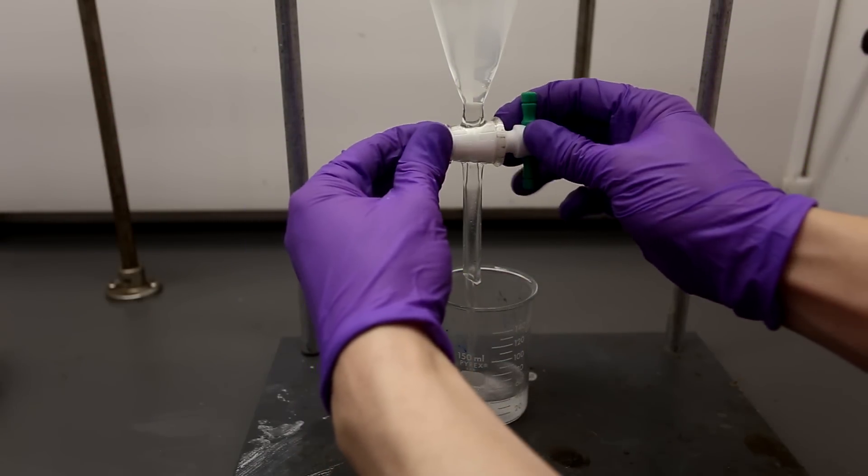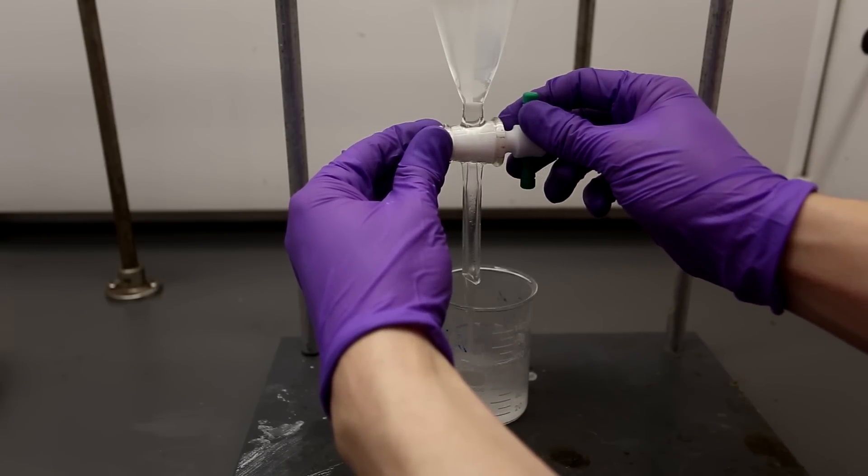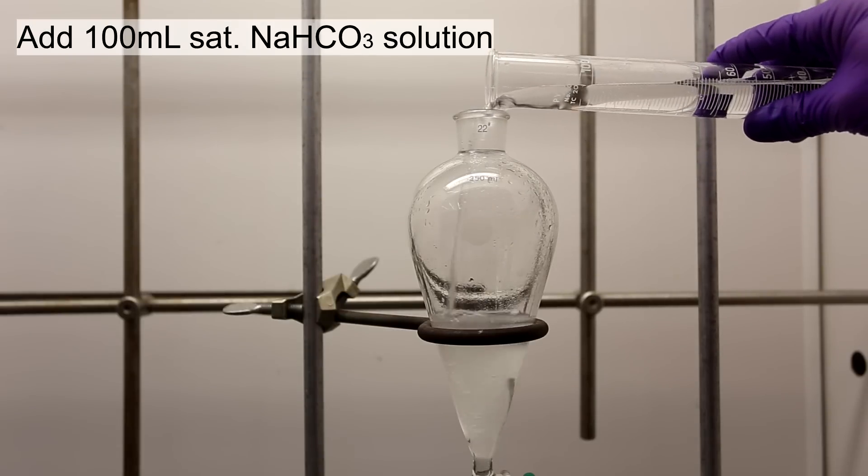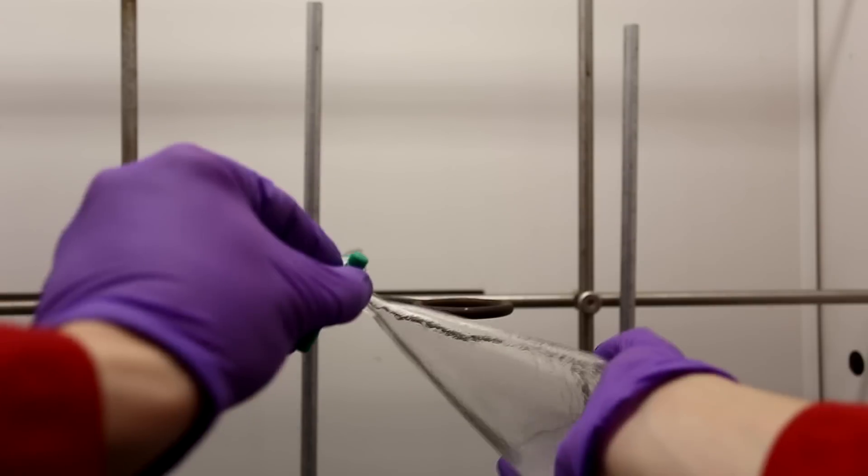Be aware that at this point the aqueous layer and the organic layer might be a little bit cloudy, but that's fine. Again, the pentyl acetate is washed with 100 milliliters of saturated sodium bicarbonate solution, shaken, and the aqueous layer is discarded.